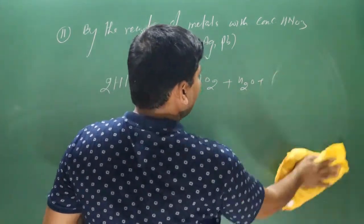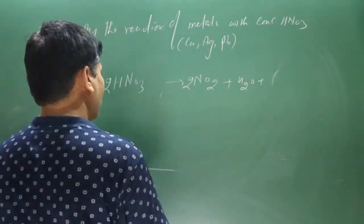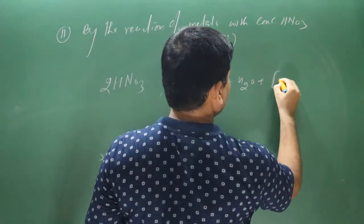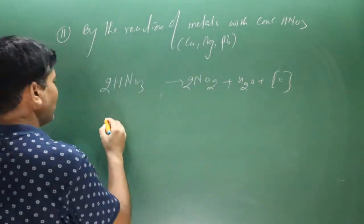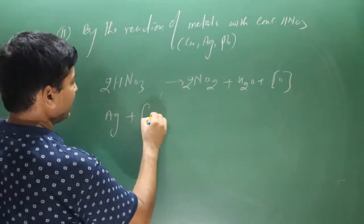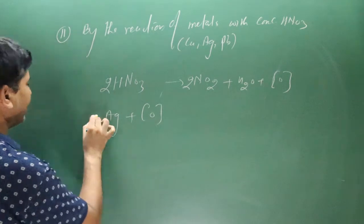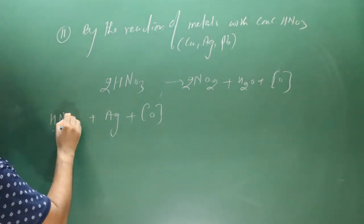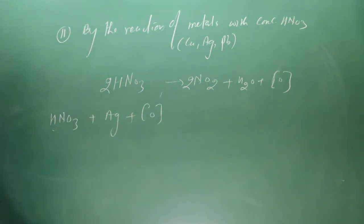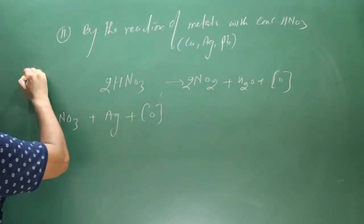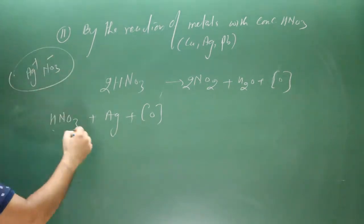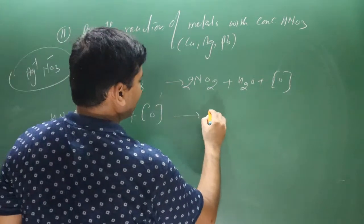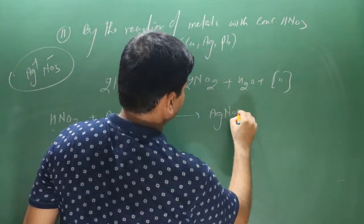Silver is being oxidized by nascent oxygen in the presence of strong acid HNO3. Silver ion (positive charge) and nitrate ion (negative charge) combine to give the salt silver nitrate.